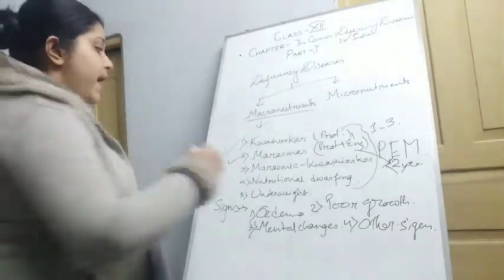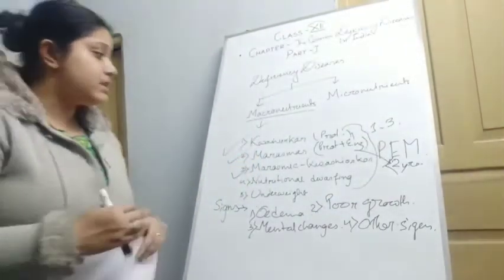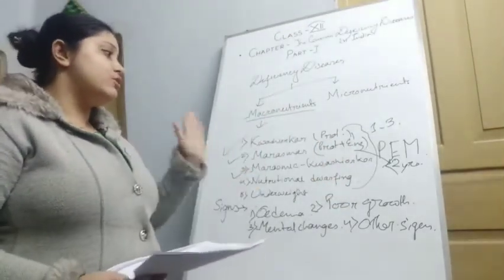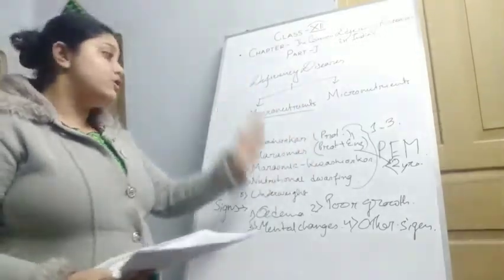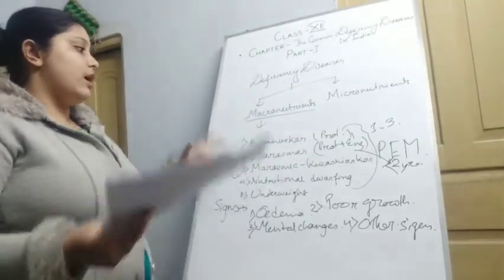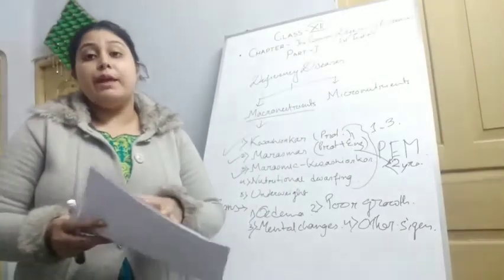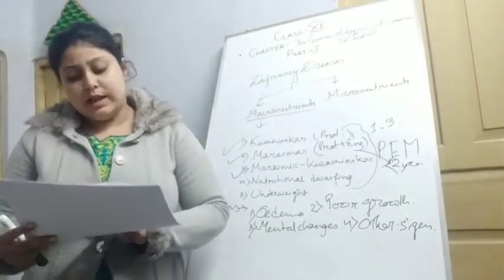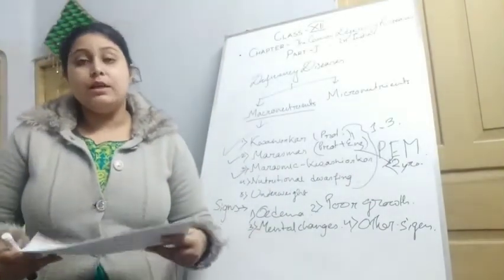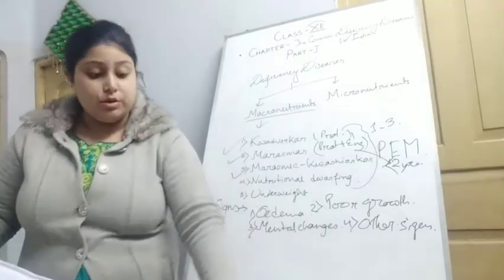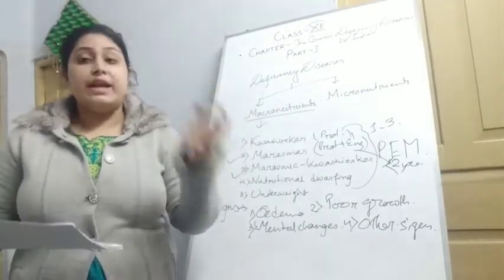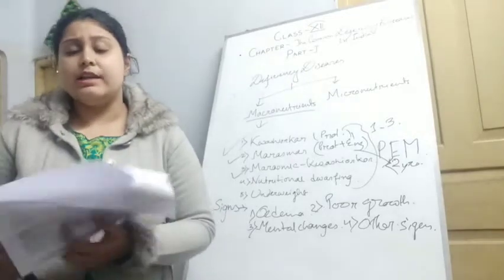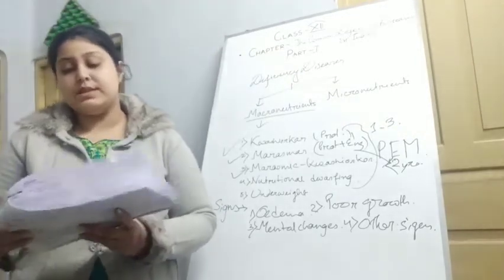Now coming to Marasmic Kwashiorkor, where Marasmus and Kwashiorkor come together. They have both protein deficiency and calorie deficiency. When these two combine, they become a bigger problem — Marasmic Kwashiorkor. Extreme muscle wasting can be seen; they cannot lift anything, they cannot write, they cannot do anything. Edema and absolute weakness are very common features of this condition.